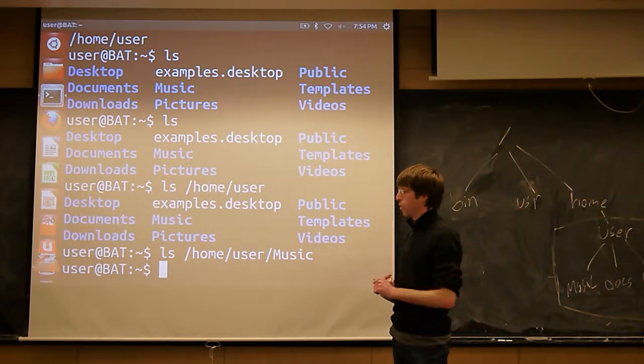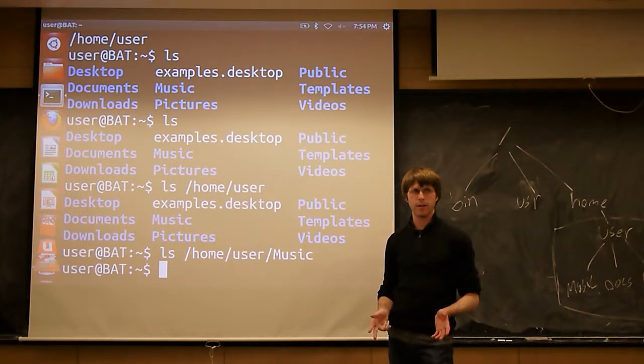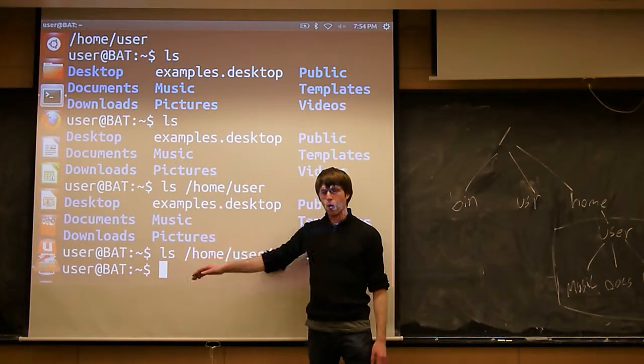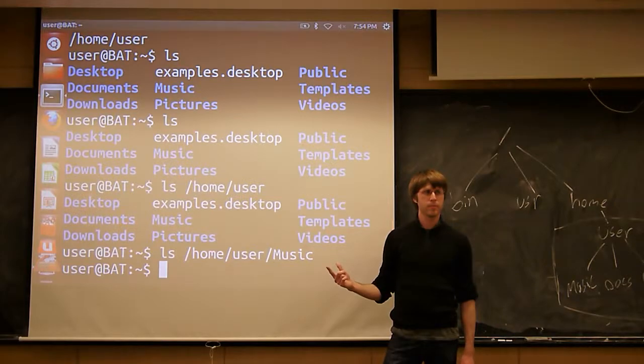So the print working directory command tells you where you currently are. The ls command will tell you about what's inside a directory, either the one you're currently in, if you run it with no arguments, or the directory you specify if you run it with a single argument. Make sense?